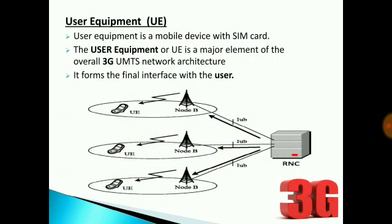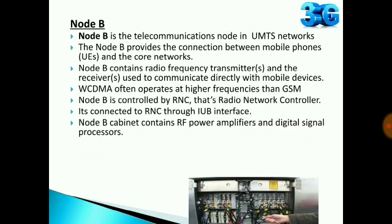User Equipment: The user equipment is a mobile device with a SIM card. The user equipment is a major element of the overall 3G UMTS network architecture. It forms the final interface with the user. This is a schematic diagram.